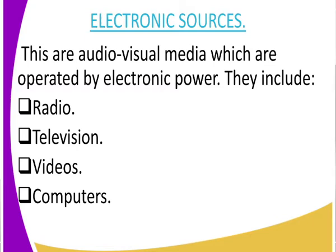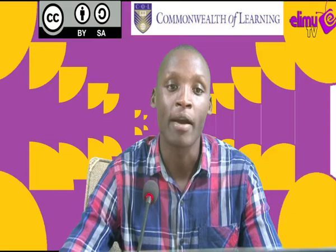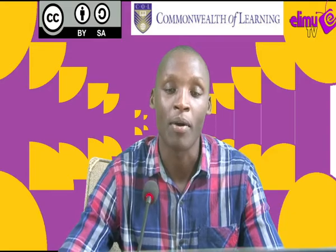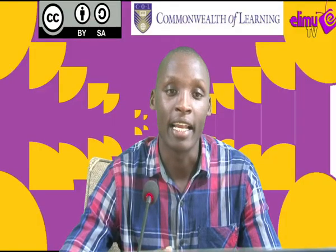Electronic sources are audio-visual media which are operated by electronic power. These media include the radio, television, videos, and computers. I know we all know what these are — they are operated by electronic power.